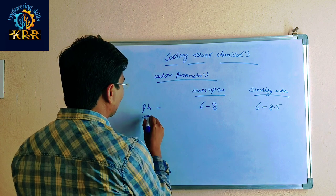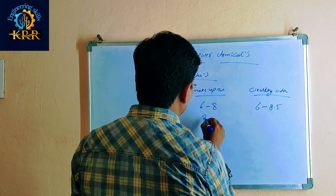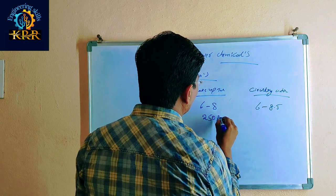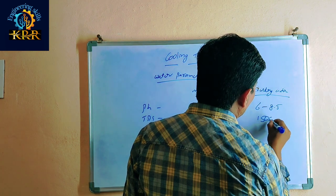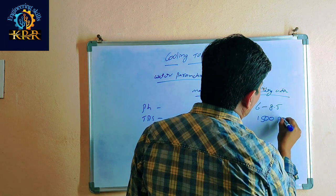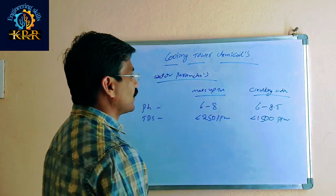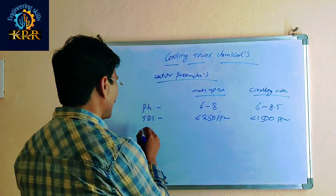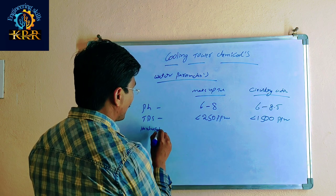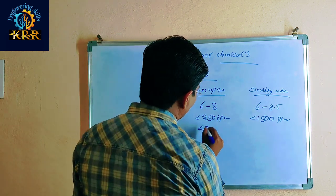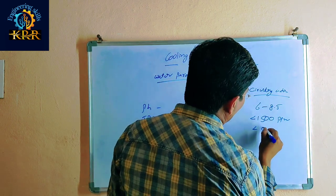For TDS: in makeup water it should be less than or equal to 250 ppm, and in circulation water 50 to 100 ppm. For hardness: in makeup water less than or equal to 50 ppm, and in circulation water less than or equal to 500 ppm.